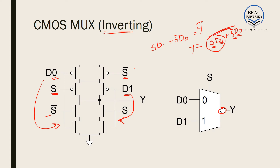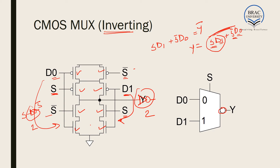Counting the transistors for the CMOS MUX implementation: the main pull-up and pull-down network uses 8 transistors, and the two NOT gates contribute 2 transistors each, giving a total of 12 transistors. So we can see that CMOS is a better option than the logic-level gate implementation which required 20 transistors.